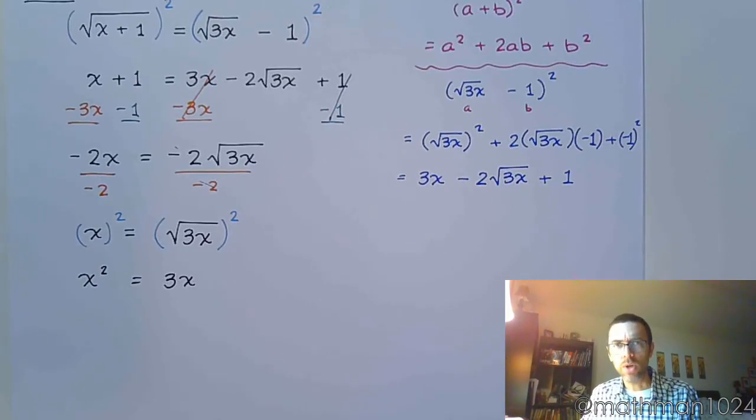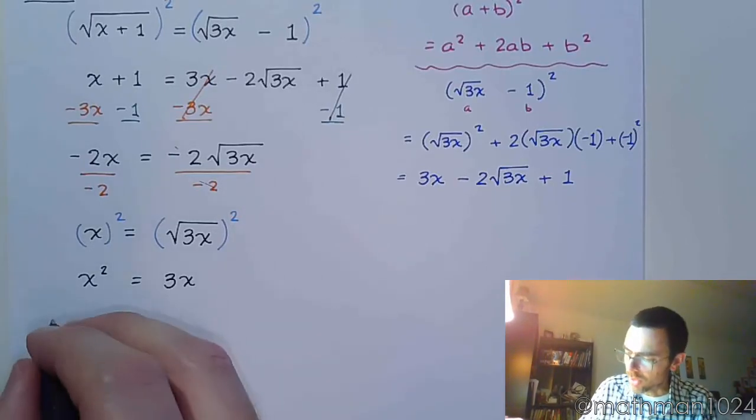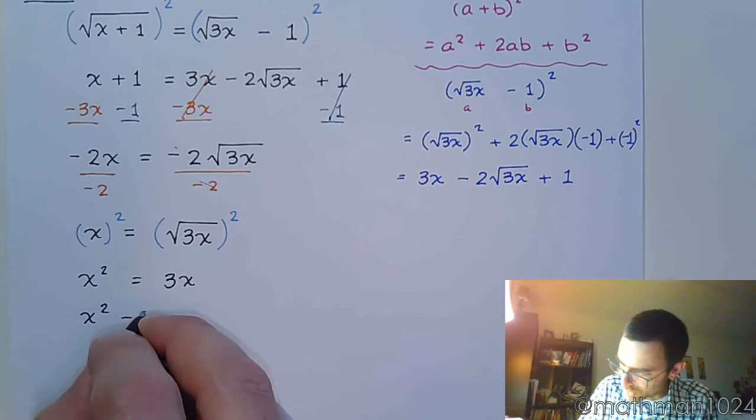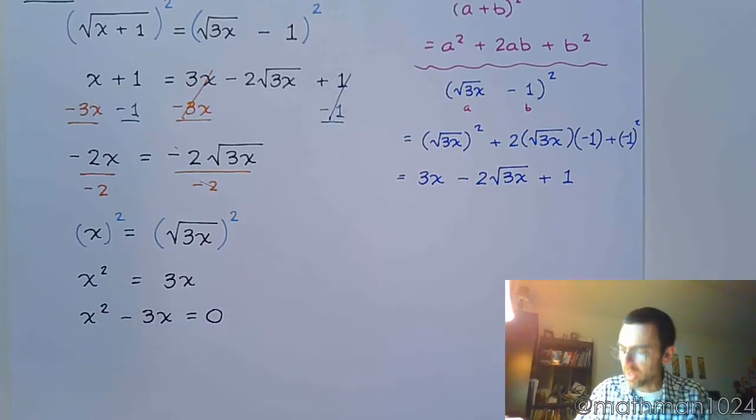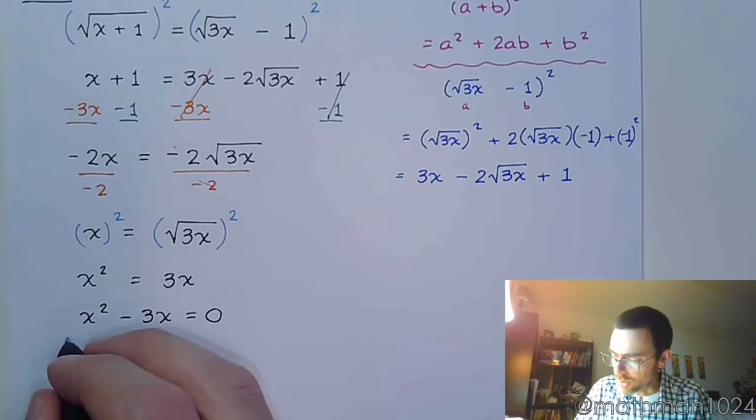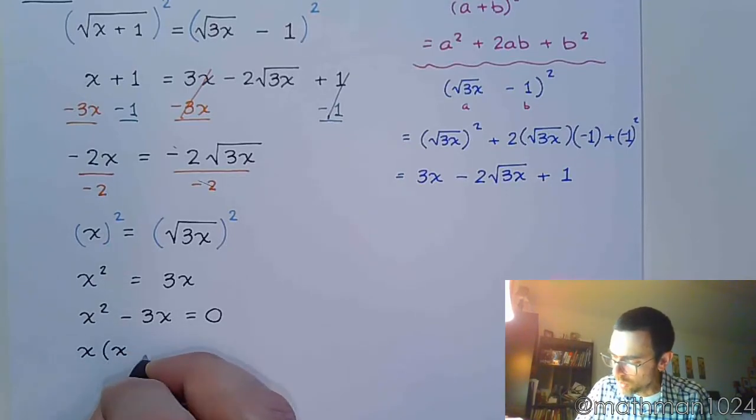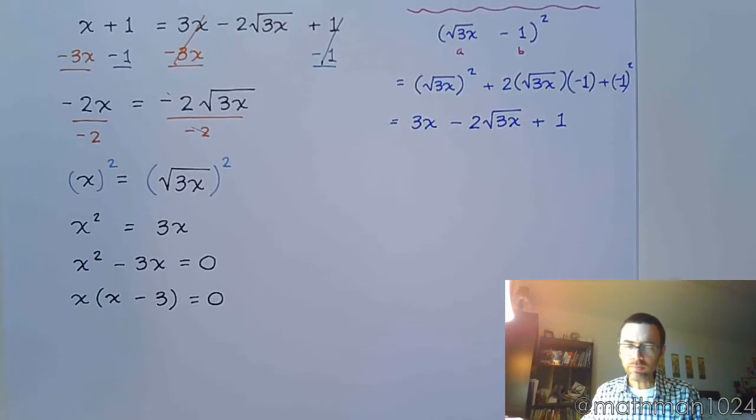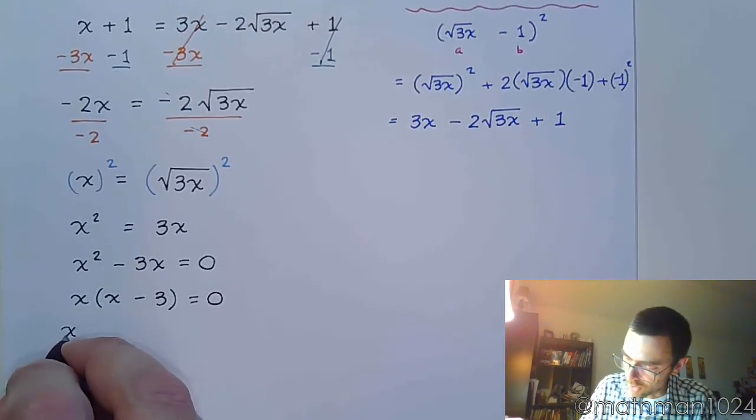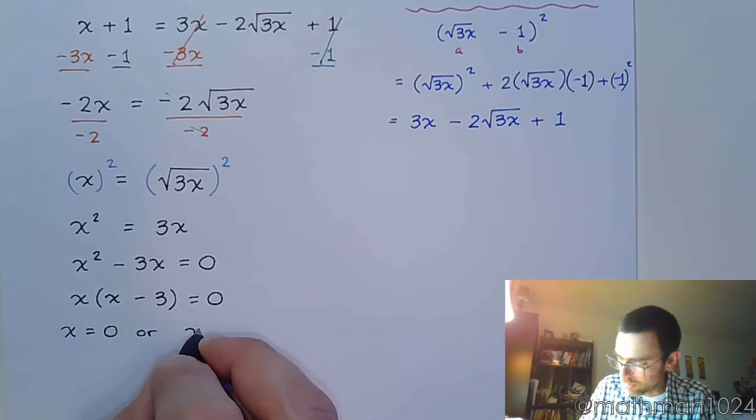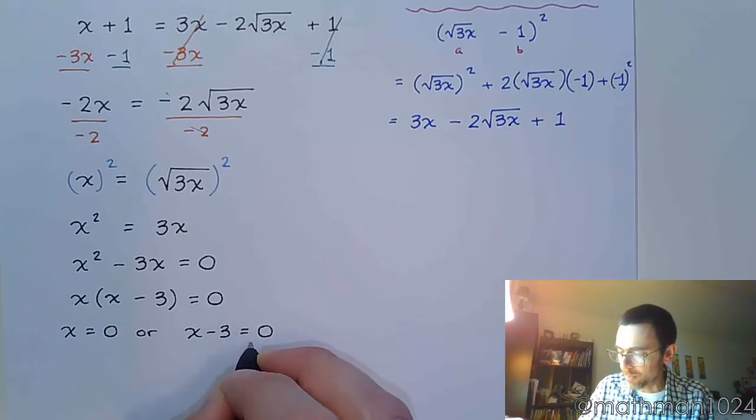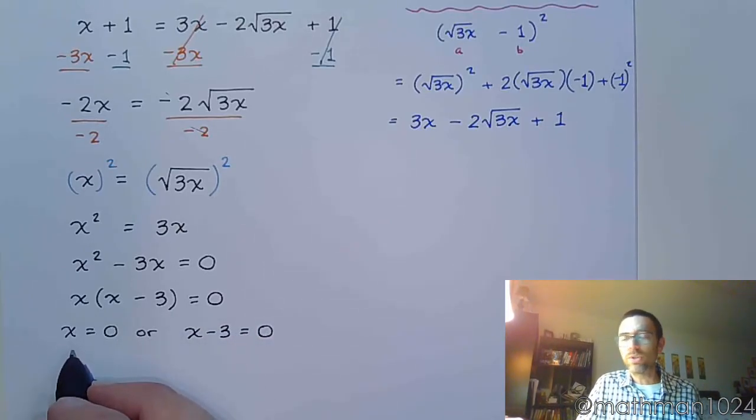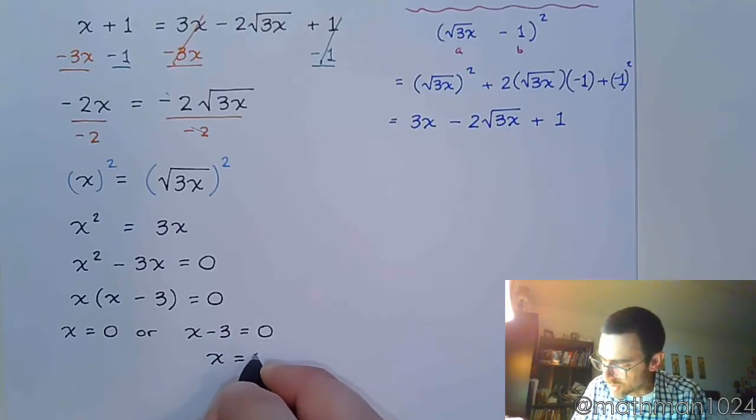So in order to solve this we want to move everything to the same side. So let's go ahead and move that 3x over here by subtracting 3x. And let's factor. Now one of the things that a lot of people forget about with factoring is that you always look for the greatest common factor first. So there's a common factor between these two terms of x, so factor that out, we are left with x minus 3. And from here we just solve this by setting each factor equal to 0, so it means x is equal to 0, or the other factor x minus 3 is equal to 0. This guy right here is already solved for, so you don't need to do anything else, but over here move the 3 to the other side so x equals 3.